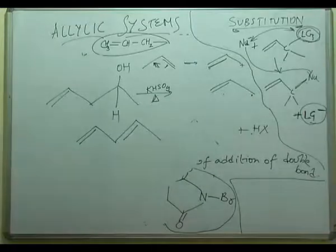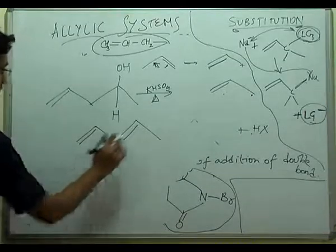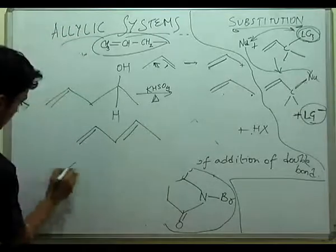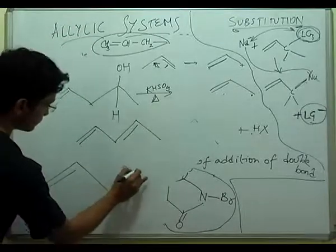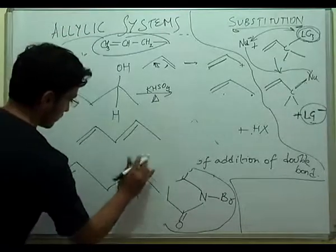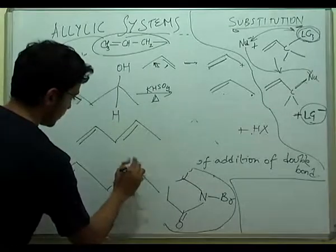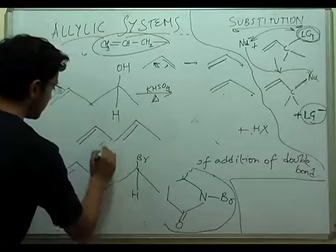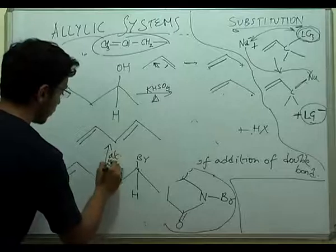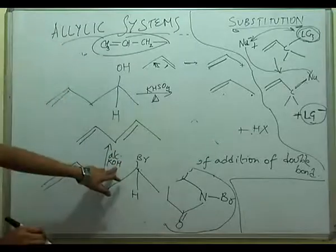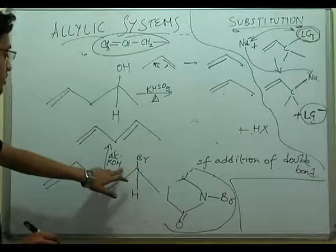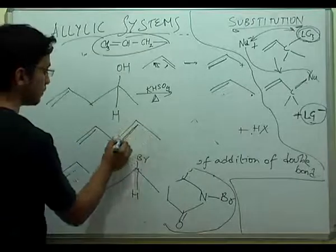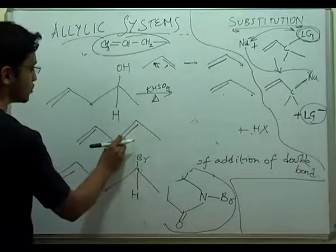This can also be obtained from an allylic halide. How? Now we take an allylic halide like this and we provide alcoholic KOH to it such that dehydrohalogenation takes place and such that one double bond also comes here to form a conjugated diene.